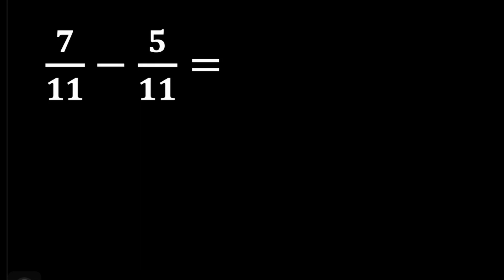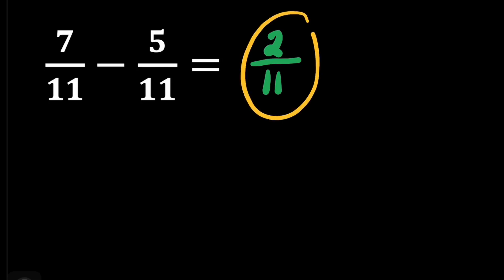That will be 7 minus 5 is equal to 2, and then just copy the denominator. If it is in lowest term, that is already our final answer. So for this question, the answer is 2 elevenths.